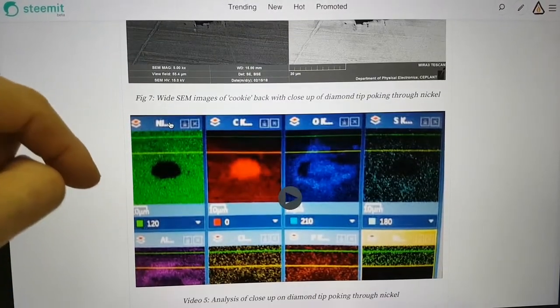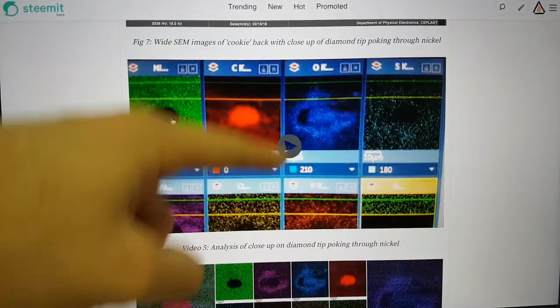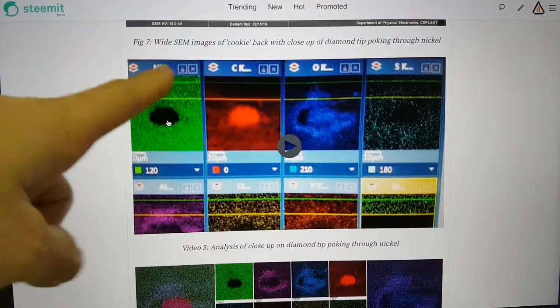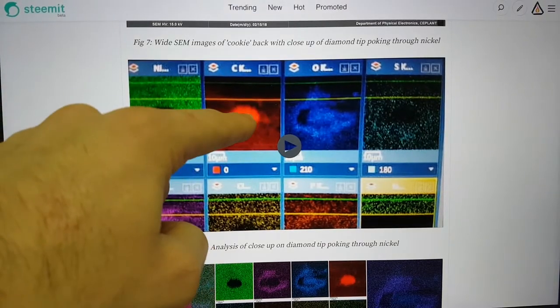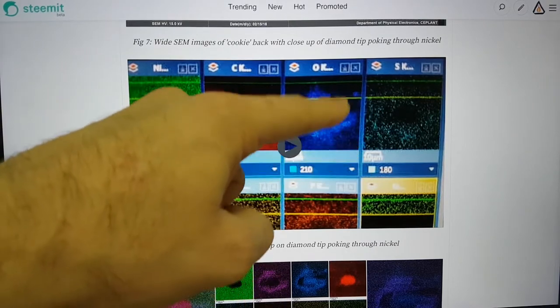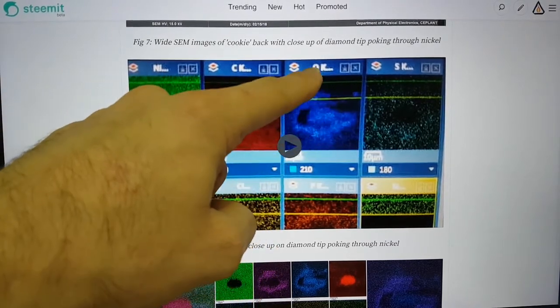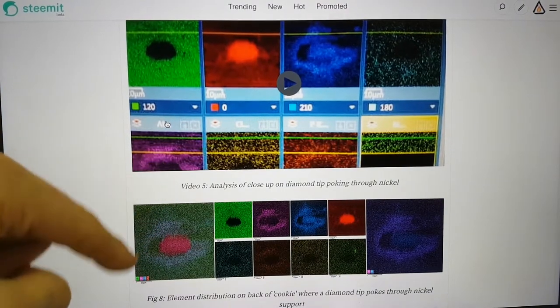This is the backside of the untreated cookie, also looking at where a diamond is poking through the nickel. Actually focusing in on this area, we found something quite interesting. You can see here the nickel in green and the carbon in red.